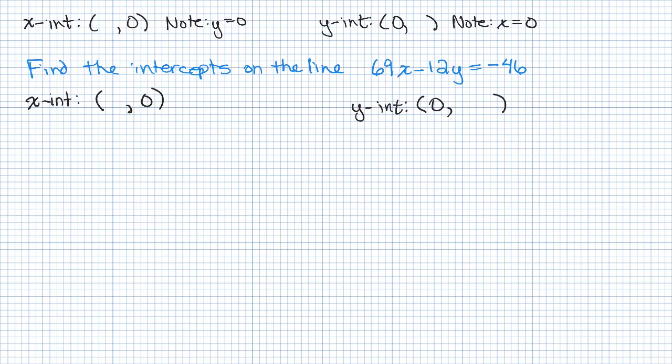So let's do the x-intercept first. So if we look at the equation of the line, 69x - 12y = -46. We're trying to finish filling out this ordered pair, and it says to plug in 0 for y. So if we put in 0 for y, that term, -12y, will end up being 0, and I will get 69x = -46.